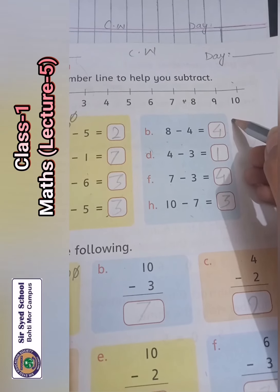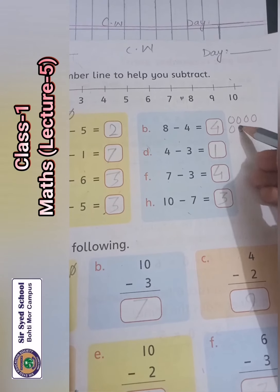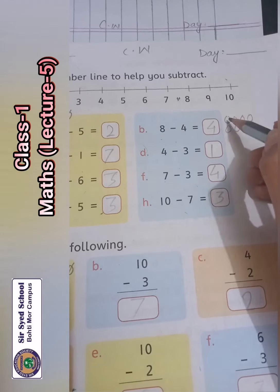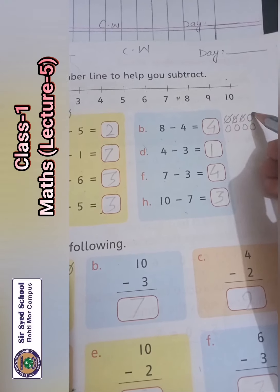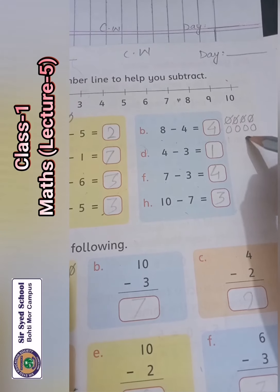8 minus 4, 4. 1, 2, 3, 4, 5, 6, 7, 8. 1, 2, 3, 4. 4 balls and cut. My answer is 1, 2, 3, 4, 4.